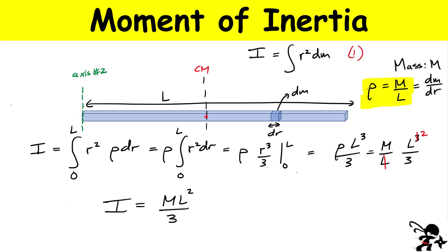Notice that this moment of inertia is bigger than the previous one. The first case through the center of mass was one-twelfth ML squared. That's actually a general property of moment of inertia — the reason it's bigger is that mass is now much farther from the axis of rotation, and that contributes more because of the R squared dependence. Whenever you calculate through the center of mass, any other parallel axis will always give a larger value.